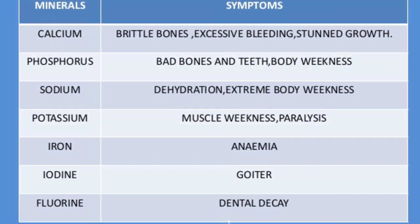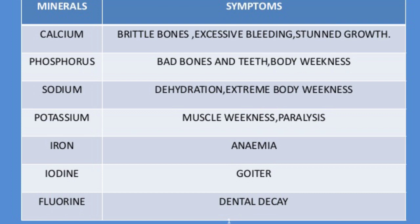In this chart, we learn about minerals. Calcium is required for strong bones and teeth. Phosphorus is required for development of bones and teeth. Iron forms hemoglobin, which carries oxygen to all the cells of the body. Iodine is essential for the proper working of the thyroid gland, and magnesium is required for proper functioning of muscles and nerves.